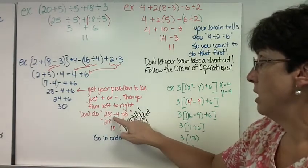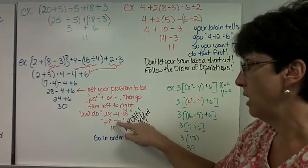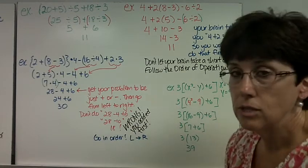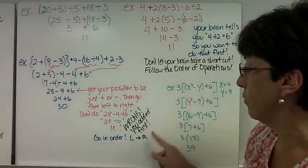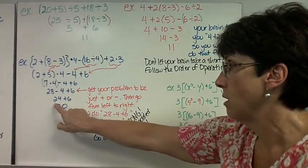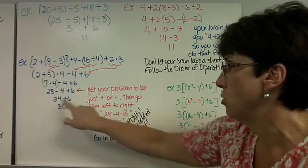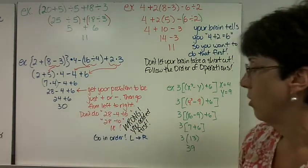Don't do this: 28 minus 4 plus 6. Oh, 4 plus 6 is 10, 28 minus 10 is 18. No, that's wrong. You added first. You need to go in order. It ends up being 28 minus 4 is 24. 24 plus 6 is 30.